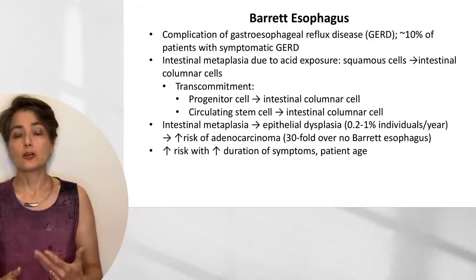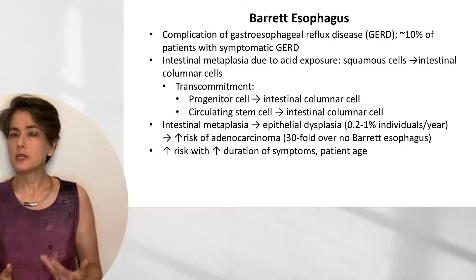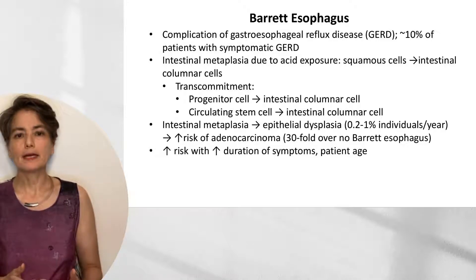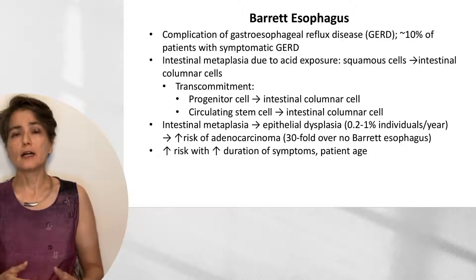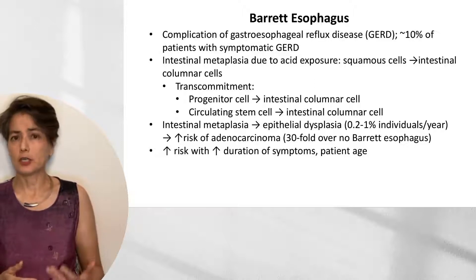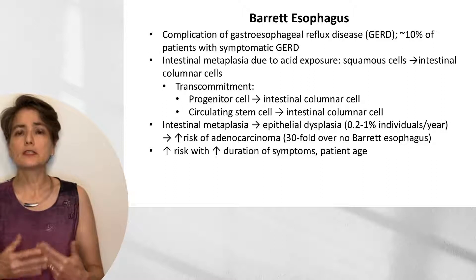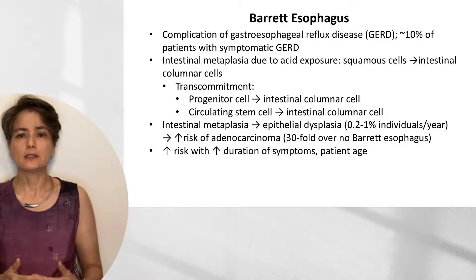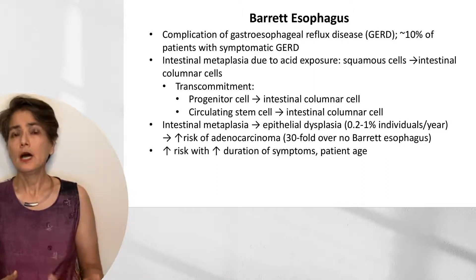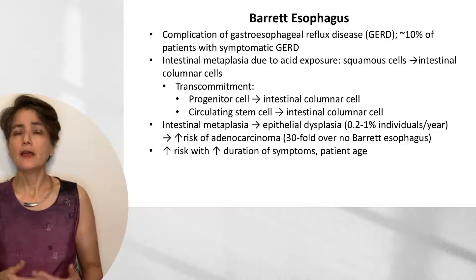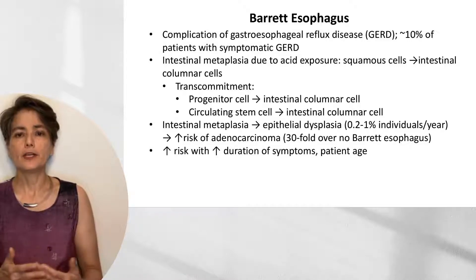The process is called transcommitment, and although we don't know the exact mechanism, there are a couple of possibilities. One is that there's a progenitor cell, either in the gastric cardia or in the esophagus itself, that is able to differentiate and become an intestinal columnar cell. Another possibility is that there are circulating stem cells that are able to colonize this injured area and differentiate into intestinal columnar cells.